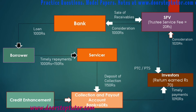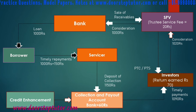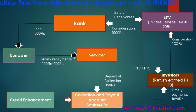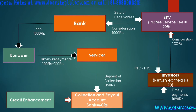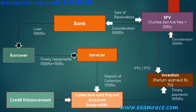In case borrowers turn defaulter, there is a third party or third bank that already guarantees that if any defaulting happens, that party will pay a fixed percentage of the defaulted amount, and this is held in the collection and payout account. Whenever a defaulter comes into the picture, the bank suffers the most because investors must get their return — they are providing cash in hand and the middleman SPV provides return to the investors.